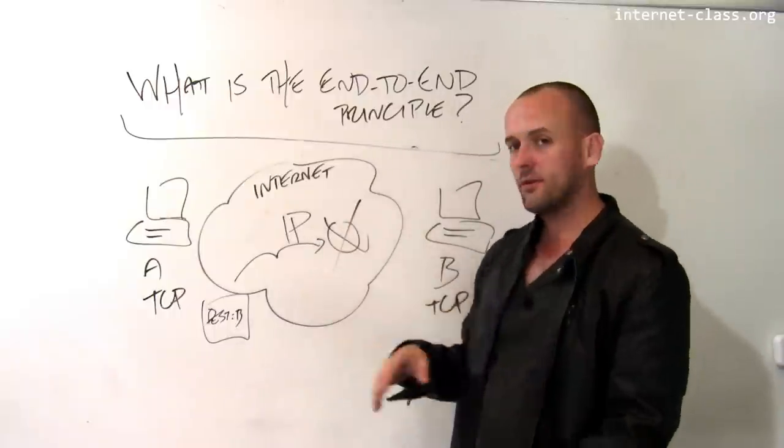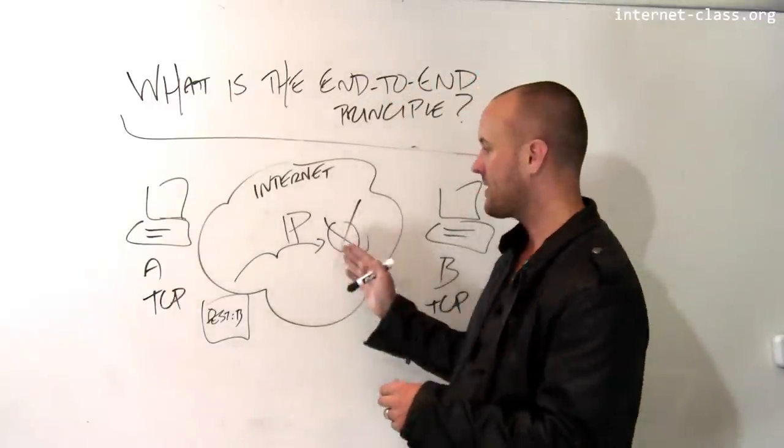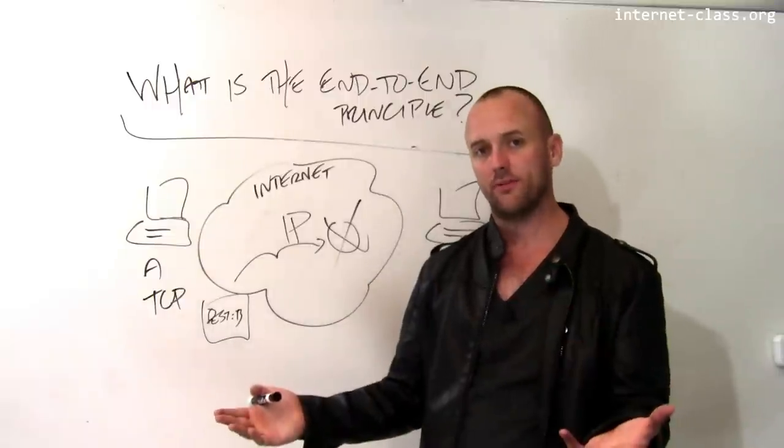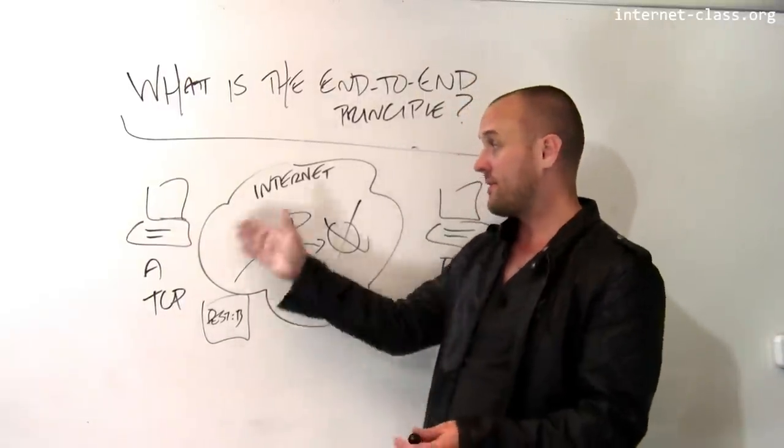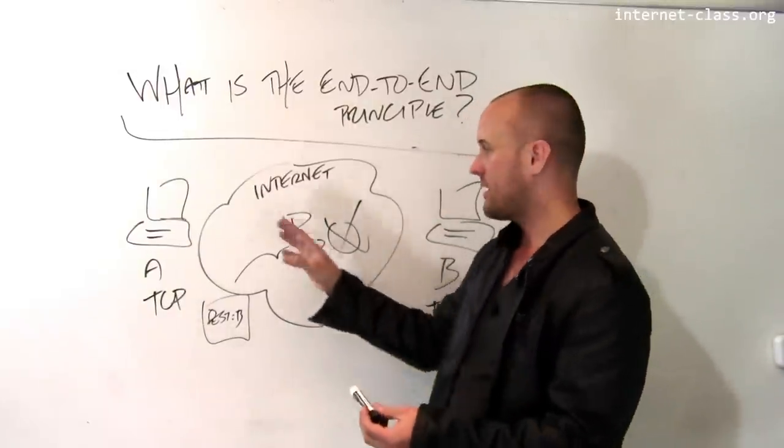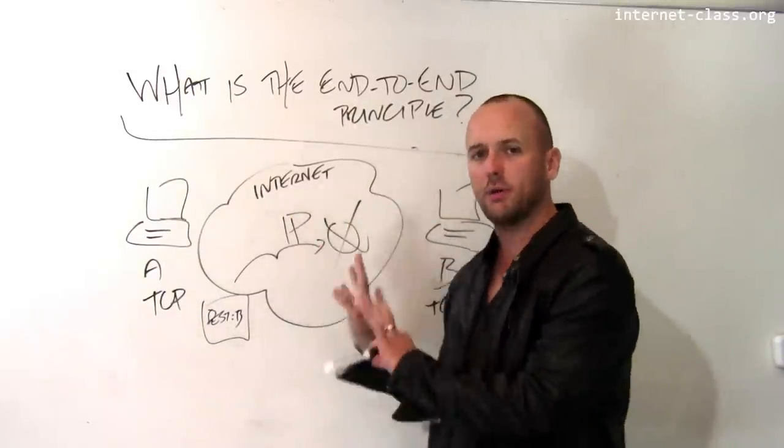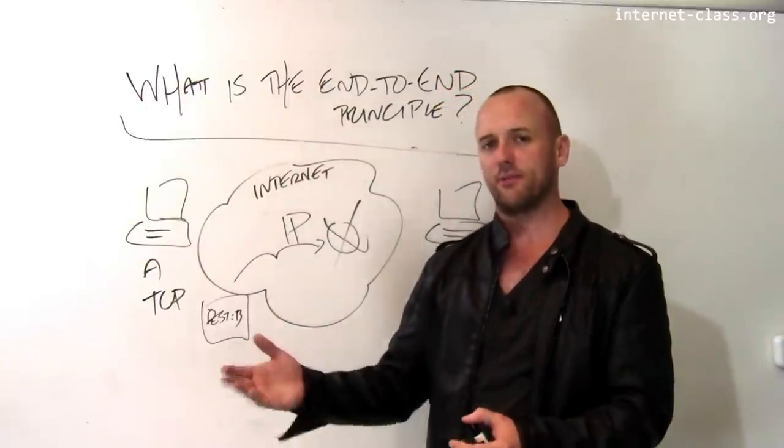The IP layer is also useful because it's not doing more than you need. If the IP layer, for example, implemented reliable delivery, there are certain services that don't need it. And those services, if they wanted to use the internet, would have to have it. There'd be no way around it. And so the core IP protocol would be doing a lot of extra work to try to provide reliability even for services that didn't need it.